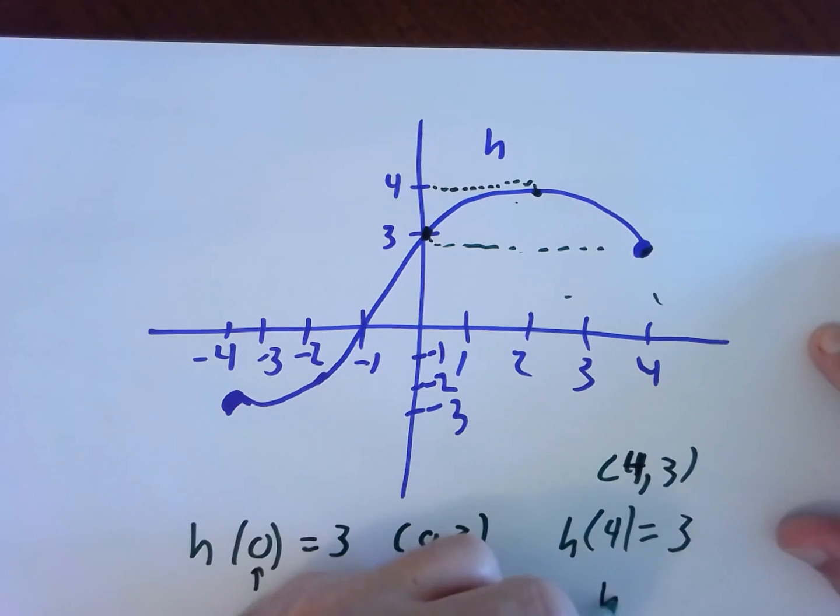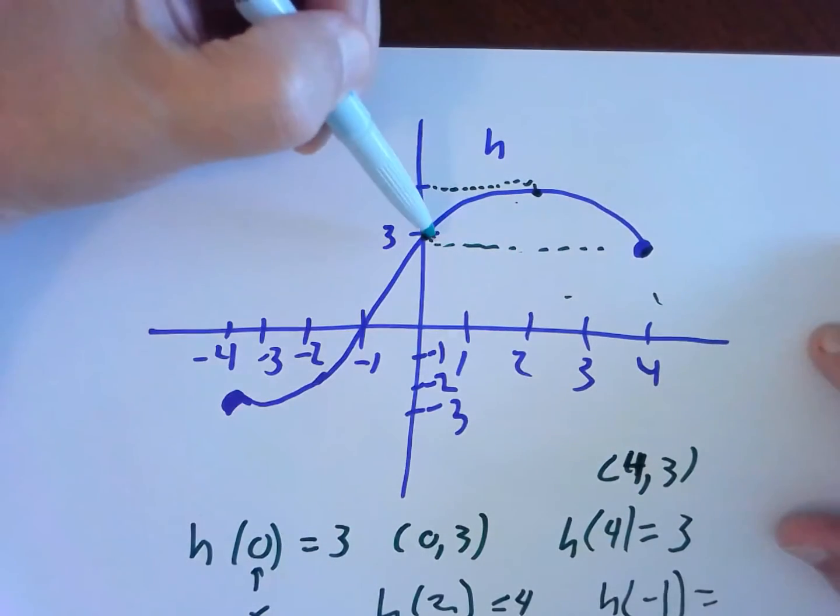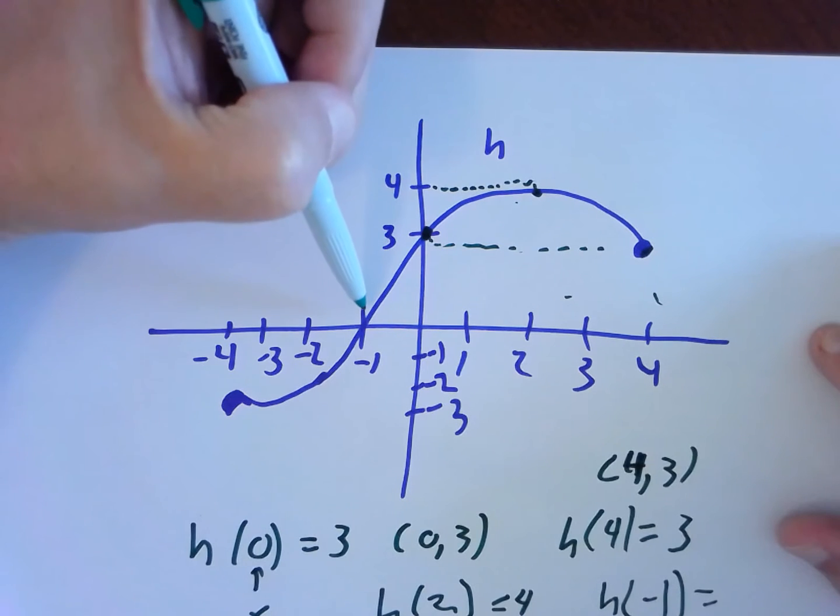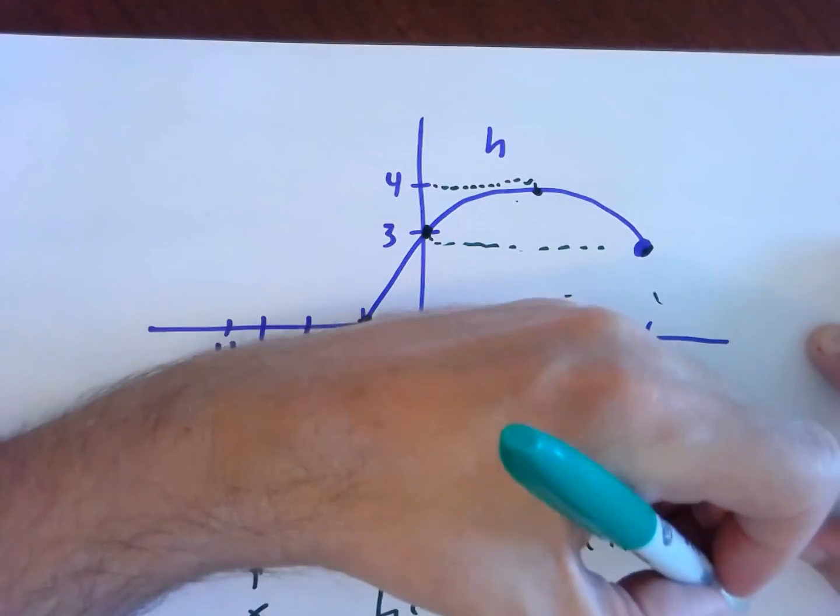Or if we wanted, say, h of negative 1. Inside is the x value. When x equals negative 1, what is the y value on the graph? Talking about that point right there. That y value is 0.